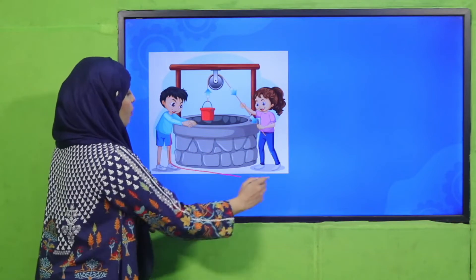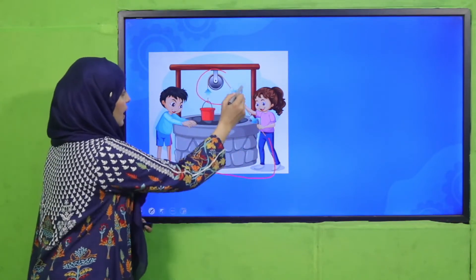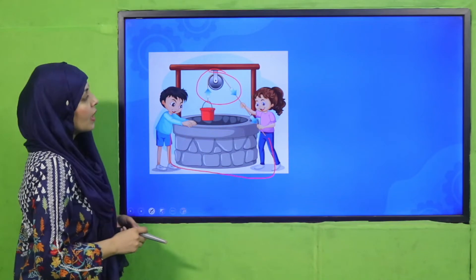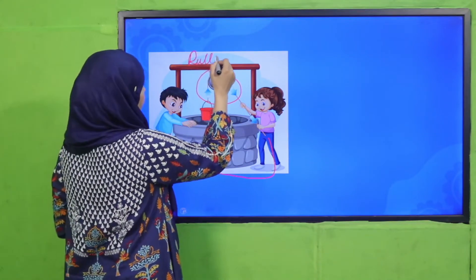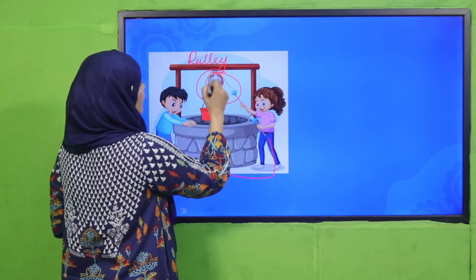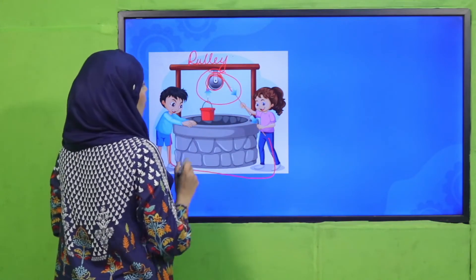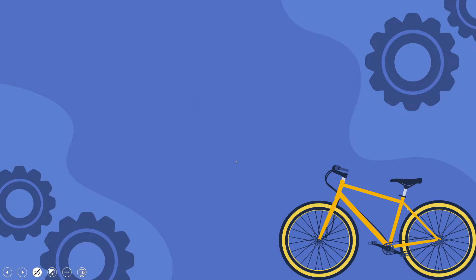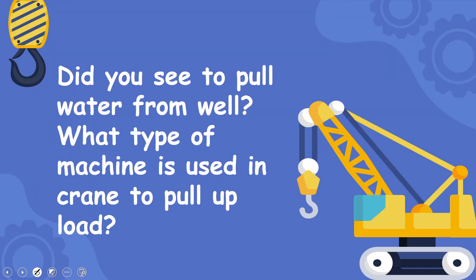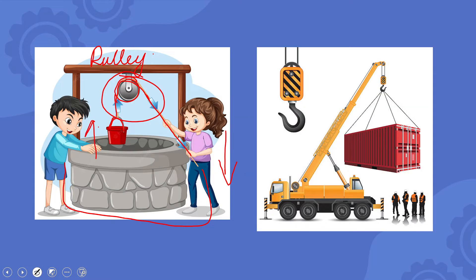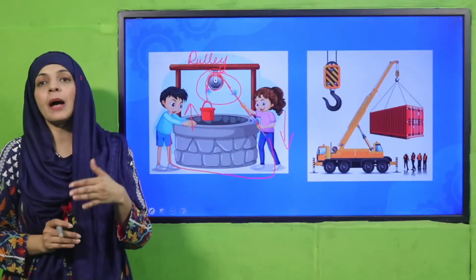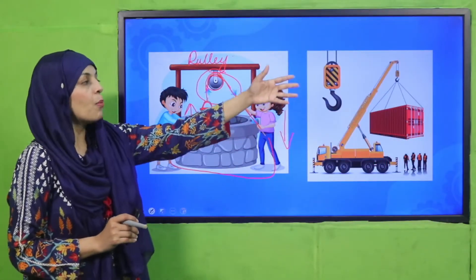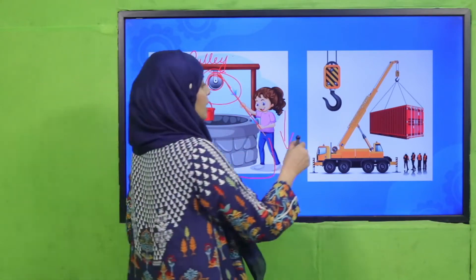Here you can see two kids pulling water from a valley — they are taking water out from a well. Can you identify this machine? This is a pulley. The wheel with a rope tied over it is a pulley. One end of the rope has a bucket attached, and force is applied at the other end. The force is applied downward, which causes the bucket to move upward. This is how your work becomes easier.